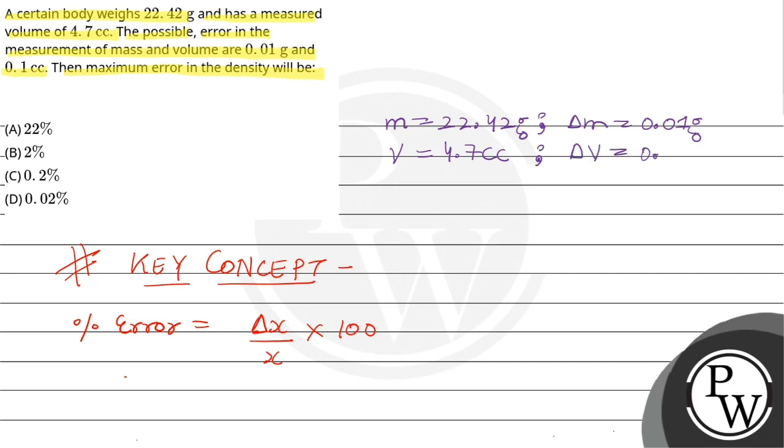We need to find percentage error in density. What is density? Density is mass per unit volume. So percentage error in density equals delta D by D into 100. This is our first equation, where D is our density.